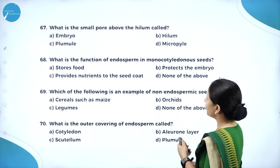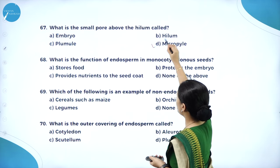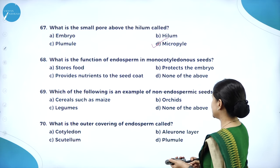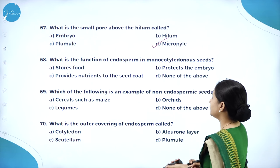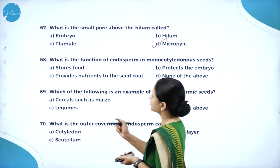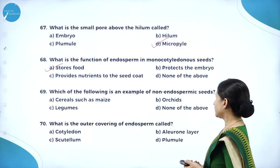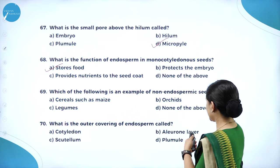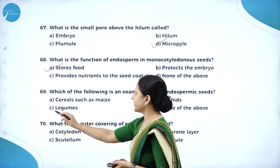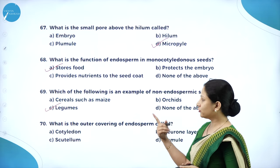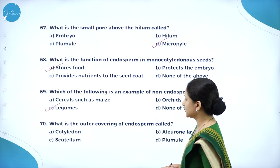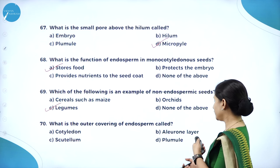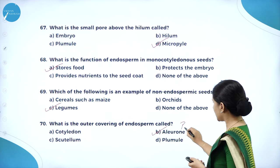What is the small pore above the hilum called? It is called micropyle — 'micro' means small and 'pyle' means pore. What is the function of endosperm in monocotyledonous seeds? It stores food. Which of the following is an example of non-endospermic seeds? It is legumes — pea, bean, and other leguminous plants do not have endosperm. What is the outer covering of endosperm called? It is the aleurone layer, which is very rich in protein.